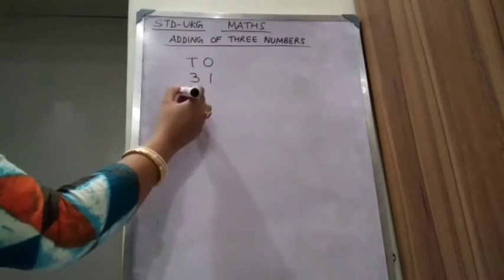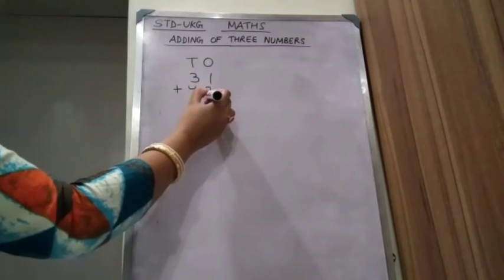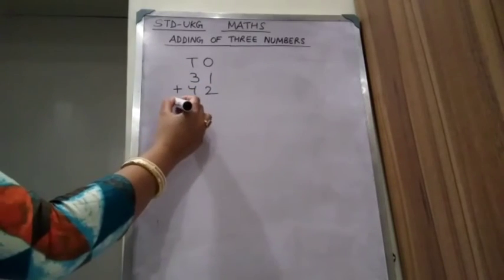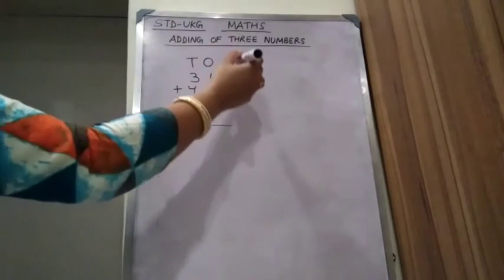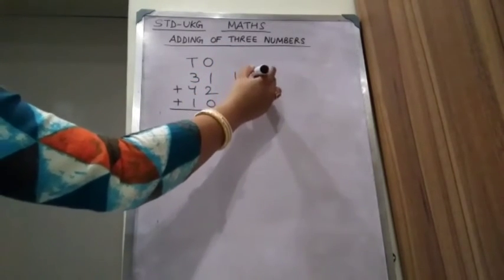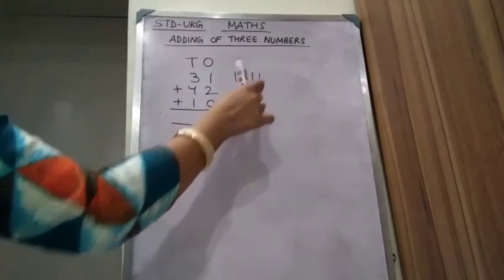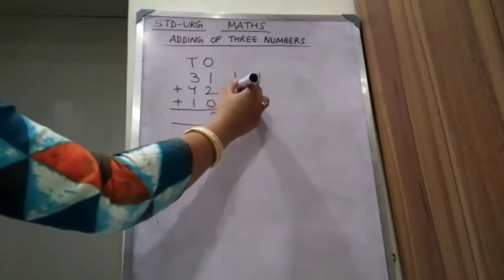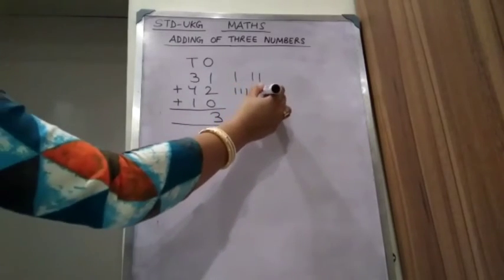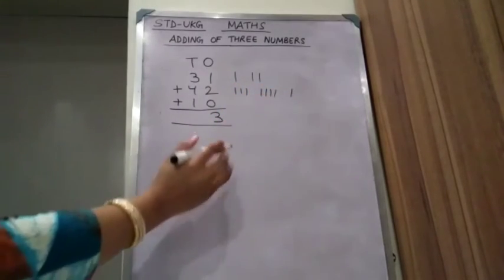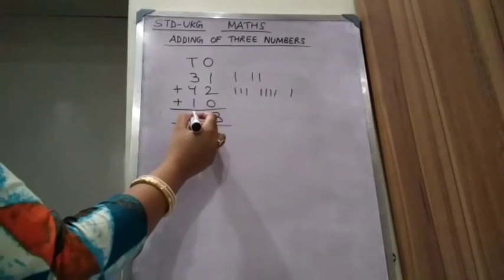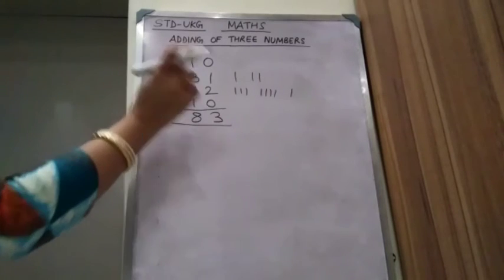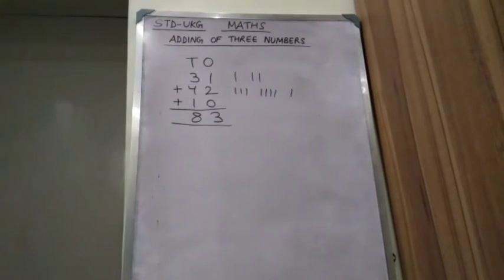31 plus 42 plus 10. Ones column: 1, 2, 0 — count 1, 2, 3. Tens column: 3, 4, 1 — count 1, 2, 3, 4, 5, 6, 7, 8. This is the answer: 8 tens, 3 ones, which is 83.